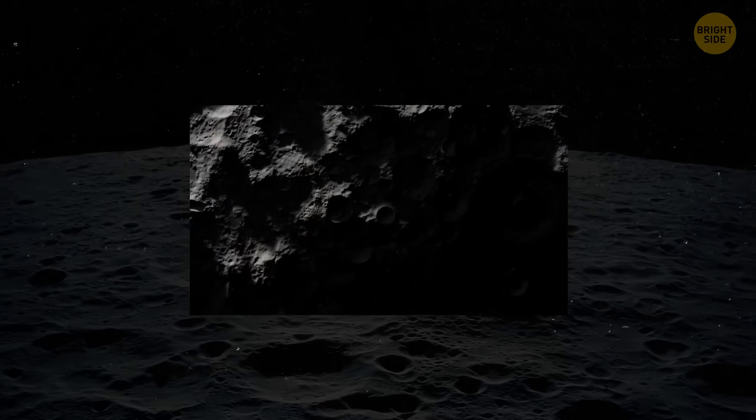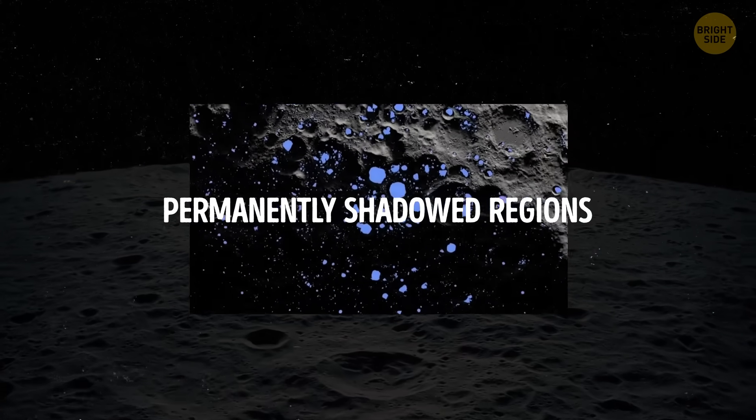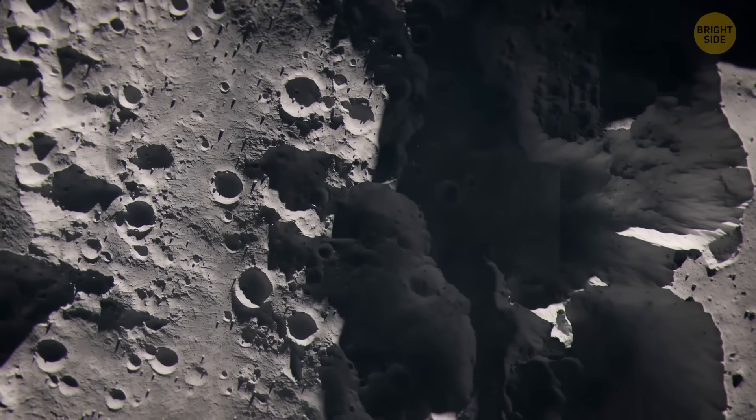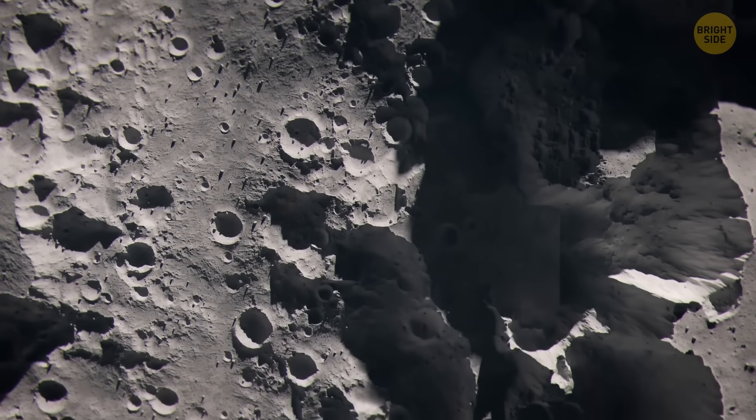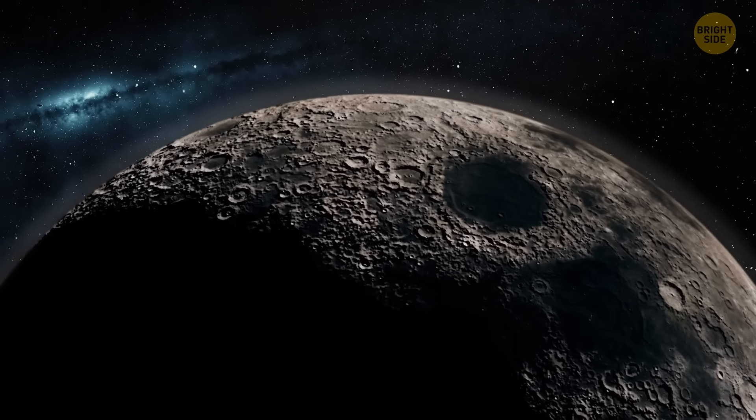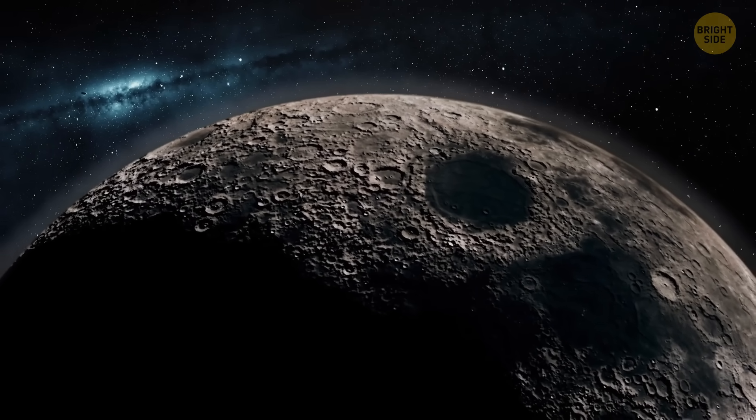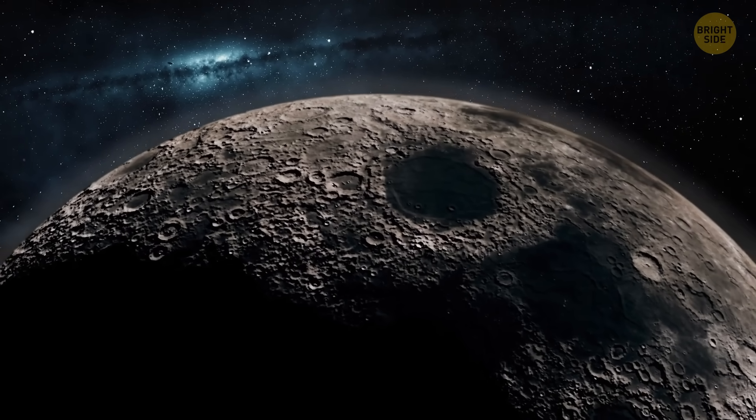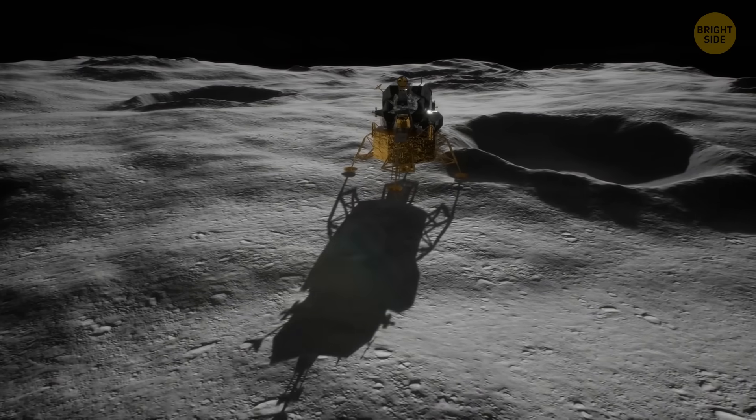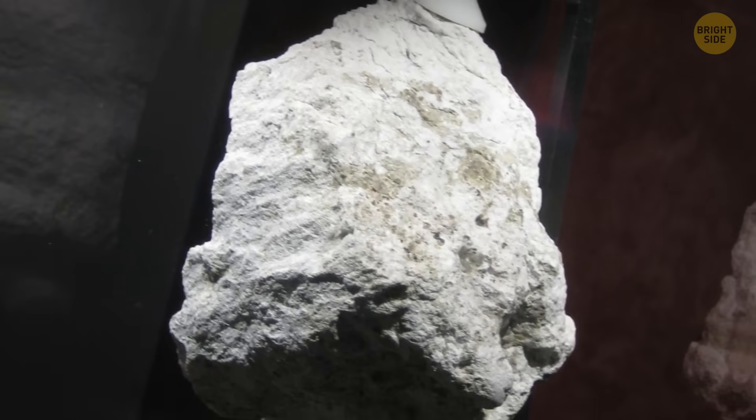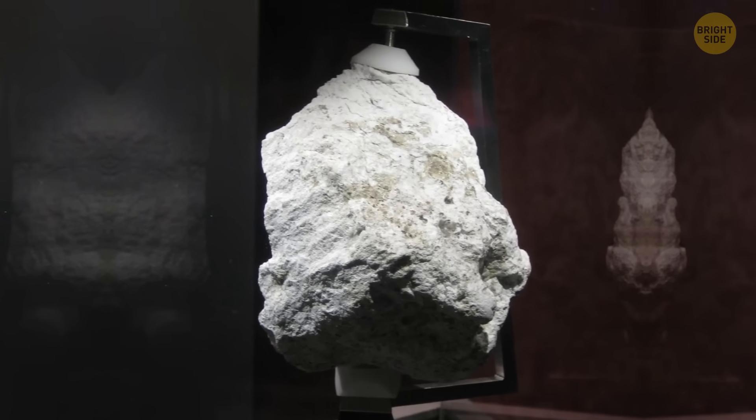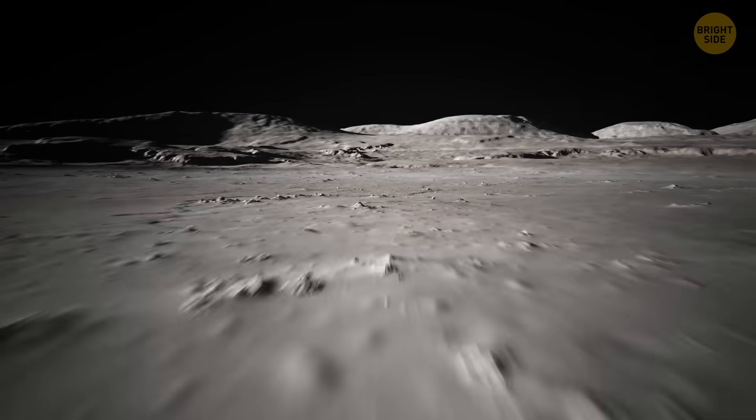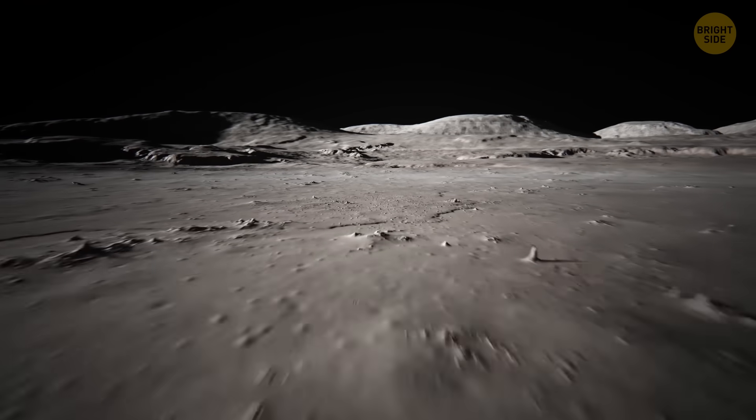He pointed out there could be water on the moon in special areas called permanently shadowed regions. These are spots on the moon where the sun doesn't shine, so they stay dark all the time. Water ice could exist in these dark areas because they're extremely cold and the ice wouldn't evaporate. But when astronauts from the Apollo missions went to the moon, they brought back soil samples, and scientists found no signs of water in them. So, everyone went back to thinking that the moon was completely dry.